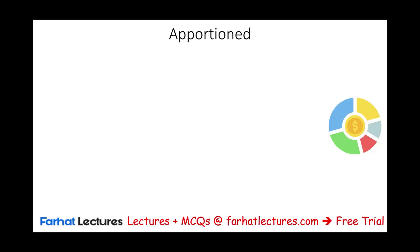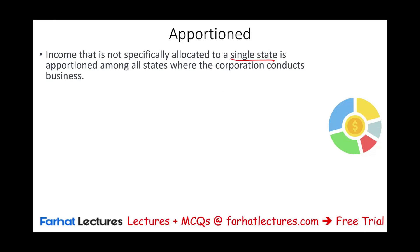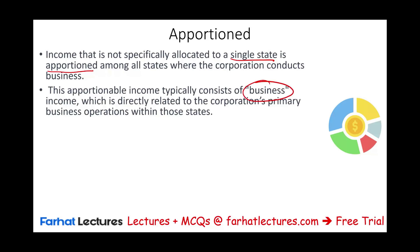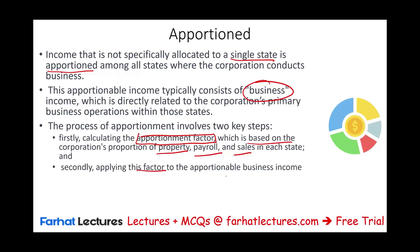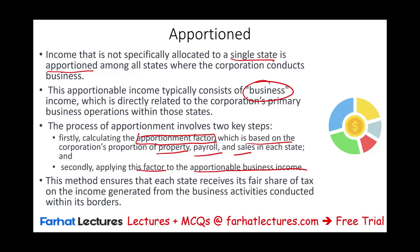For apportionment, we're talking about business income. Income not specifically allocated to a single state is apportioned among all states where the company conducts business — income directly related to the corporate primary business. The process of apportionment involves two steps: calculate the apportionment factor based on the corporate proportion of property, payroll, and sales in each state, then apply this factor to the apportionable business income. This ensures each state receives its fair share of tax.